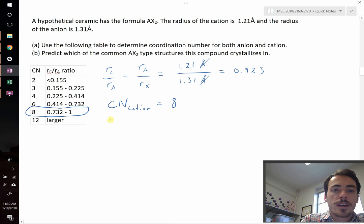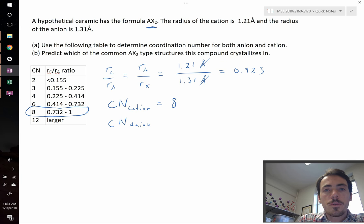Now, what is our anion going to be, the coordination number of our anion? This one's a little bit trickier. We have to look at the chemical formula. The chemical formula up here is AX₂, meaning that there's twice as many anions as there are cations. That's going to be what we use to determine what the coordination number needs to be.